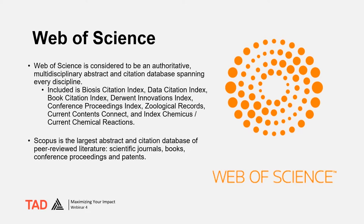Web of Science is considered an authoritative, multidisciplinary abstract and citation database spanning every discipline. It connects publications and researchers through citations and controlled indexing, covering the sciences, social sciences, arts, and humanities. However, while certain faculty working in building performance are listed and cited, their counts are not high — so this indicator needs to be added to others when considering faculty for appointment, reappointment, or tenure. Scopus is a similar subscription-based product — the largest abstract and citation database of peer-reviewed literature, scientific journals, books, conference proceedings, and patents, featuring smart tools to track, analyze, and visualize research.